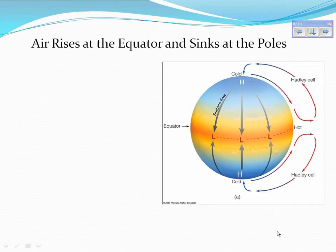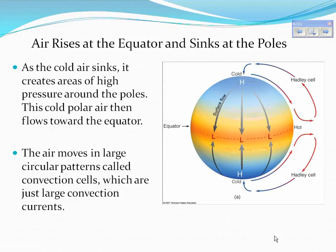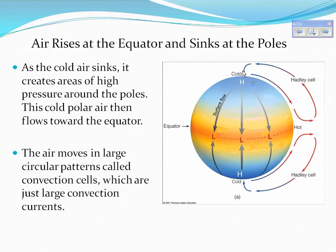Air rises at the equator and sinks at the poles. As the cold air sinks, it creates areas of high pressure around the poles, and this cold polar air then flows towards the equator. The air moves in large convection patterns called convection cells. At the equator we have areas of low pressure from warm air rising, and at the poles we have high pressure from cold air sinking.